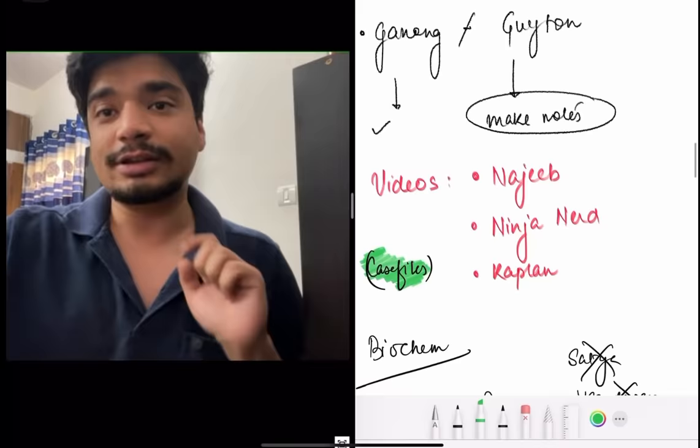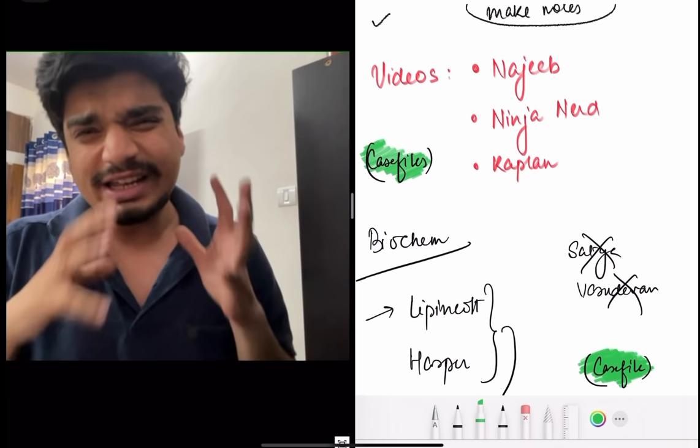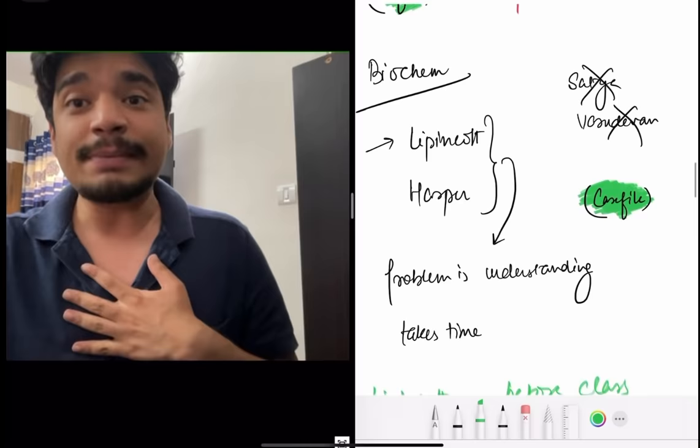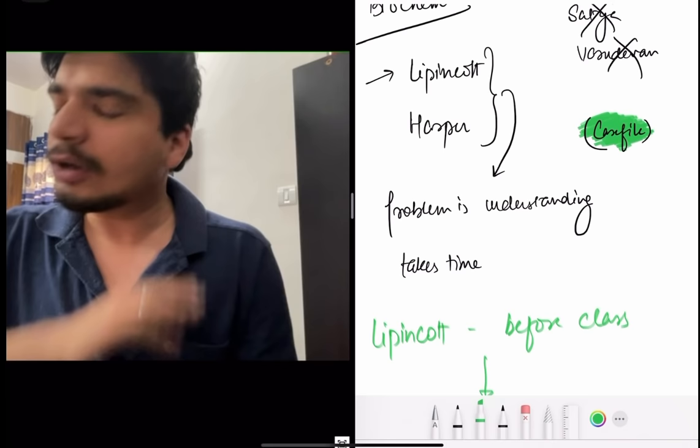So Biochemistry, again, the same thing. The problem is teachers. Book wise Harper is a tough book to understand. Harper is like Ganong, very tough to understand. Lippincott is easier to understand, but content is slightly less. And the thing is, the questions are asked from Harper a lot, especially as far as NEET PG is concerned. My preferred method of studying was I had a lecture before I was studying Lippincott. Lippincott is very easy to understand.